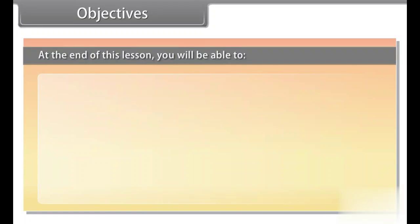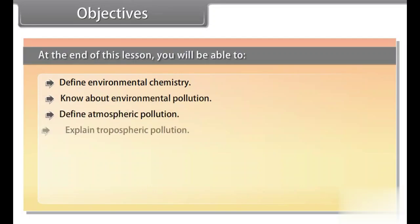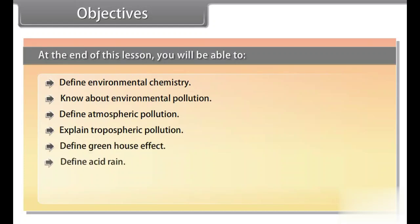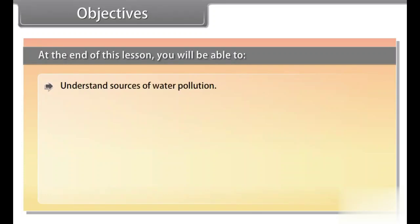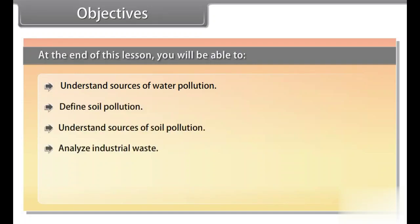Objectives. At the end of this lesson, you will be able to define environmental chemistry, know about environmental pollution, define atmospheric pollution, explain tropospheric pollution, define greenhouse effect, define acid rain, explain stratospheric pollution, define water pollution, understand sources of water pollution, define soil pollution, understand sources of soil pollution, analyze industrial waste, know about strategies to control environmental pollution, and define green chemistry.